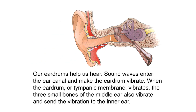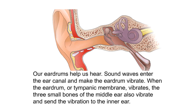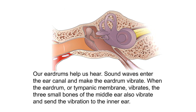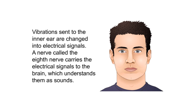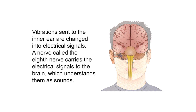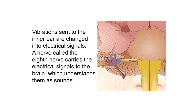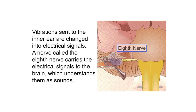Our eardrums also help us hear. Sound waves enter the ear canal and make the eardrum vibrate. When the tympanic membrane vibrates, the three small bones of the middle ear also vibrate and send the vibration to the inner ear. Vibrations sent to the inner ear are changed into electrical signals. A nerve called the eighth nerve carries the electrical signals to the brain, which understands them as sounds.